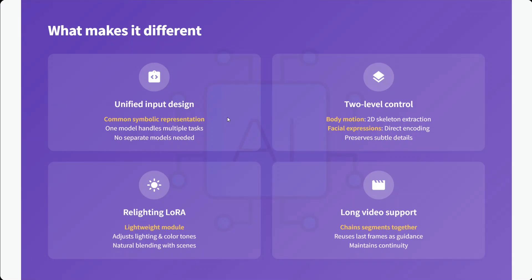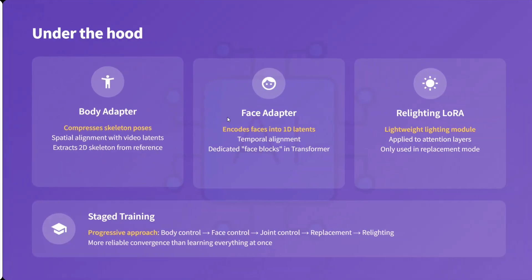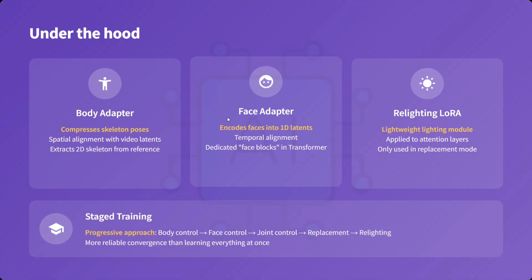What makes this different: a unified input design with a common symbolic representation means one model handles multiple tasks. There are two levels of control — body motion and facial expression. A lightweight Lighting LoRA adjusts lightning and color tones, and long video support chains segments together. Under the hood, a body adapter compresses skeleton poses and a face adapter encodes faces into 1D latents, with the Lighting LoRA applying to attention layers only when using Replacement Mode.